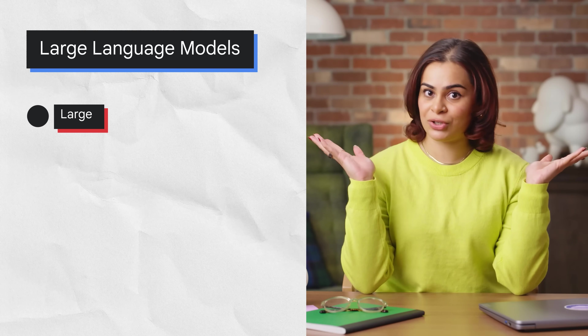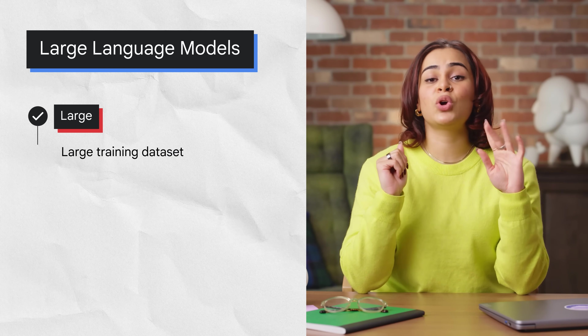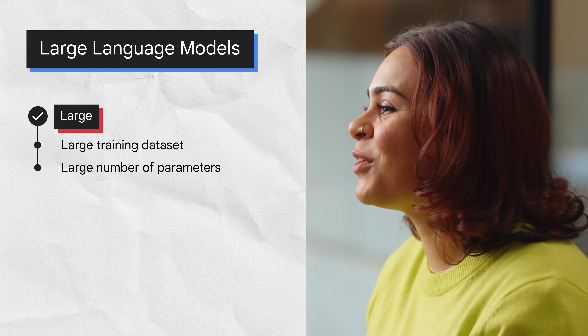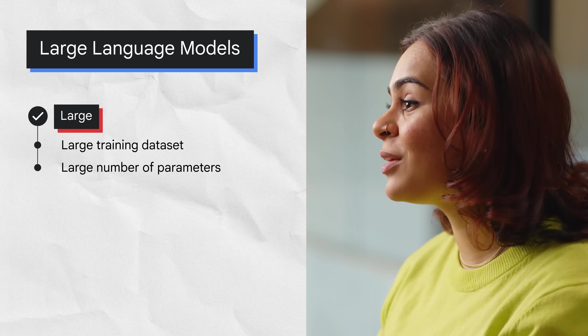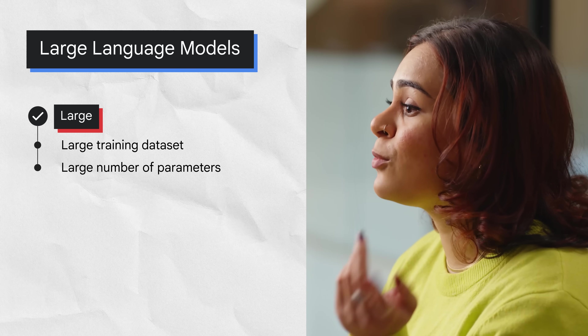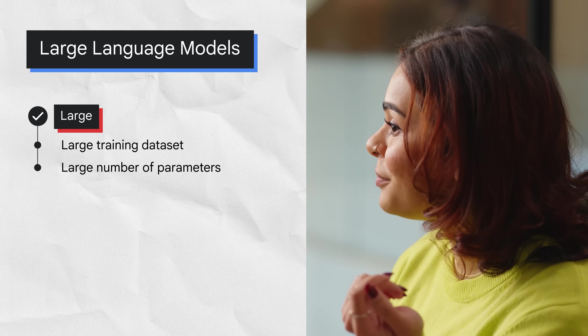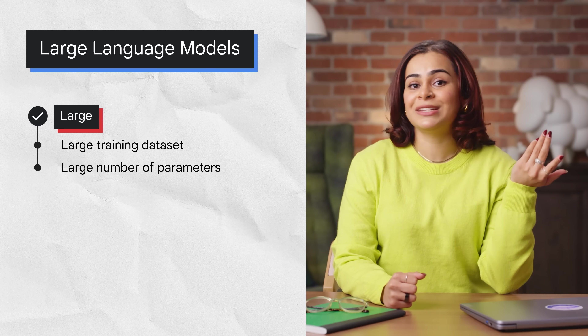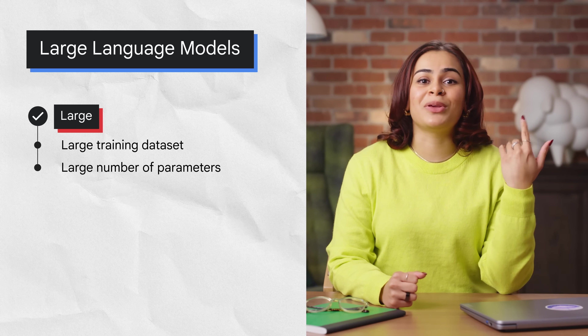Now let's further break down the concept into three major features of large language models. We'll start with the word large. Large indicates two meanings. First is the enormous size of the training dataset, sometimes at the petabyte scale. Second, it refers to the parameter count. In machine learning, parameters are often called hyperparameters. Parameters are basically the memories and the knowledge that the machine learned from the model training. Parameters define the skill of a model in solving a problem such as predicting text.